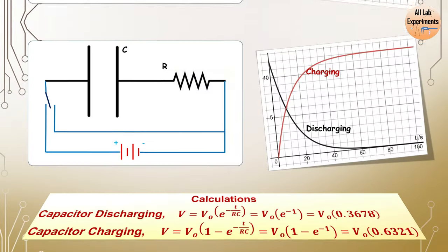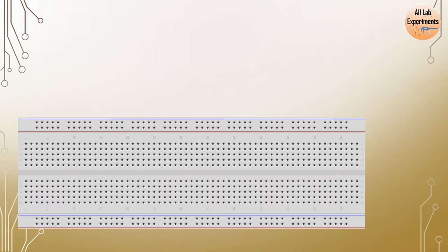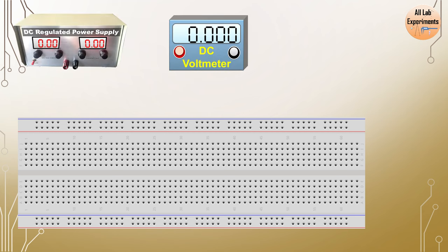To perform this experiment we need a breadboard, along with a power supply, a DC voltmeter, some components like a resistance and a capacitor, and some connecting wires. And here is our circuit.